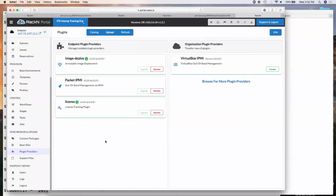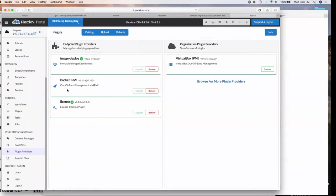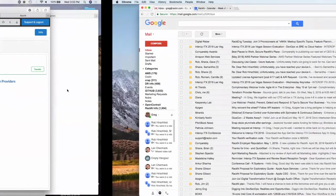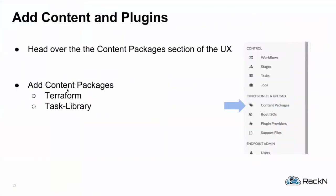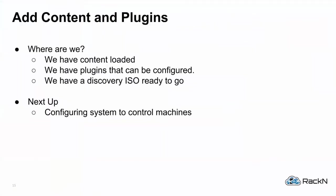We're extending DRP with additional capabilities. The content packages added a special stage for a workflow to indicate a pool of nodes for Terraform to operate against, included a task library with a runner to install on the system for post-image-deploy actions, and the plugins provide access to Packet.net — given an API key, I can do remote calls to Packet for IPMI-like actions. The image deploy toolset is provided through the plugin. Once you have those three things loaded, we're ready to configure the system.